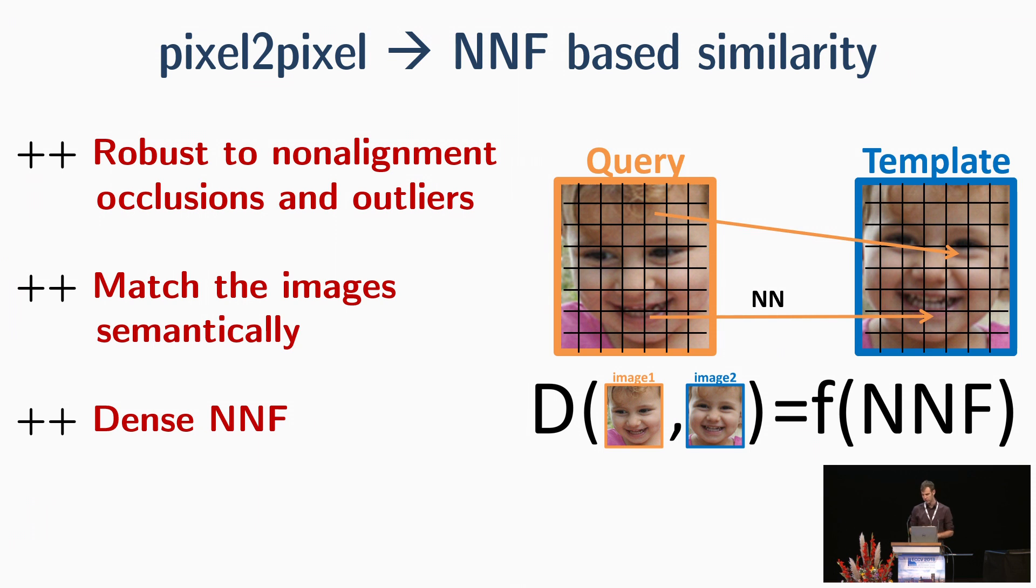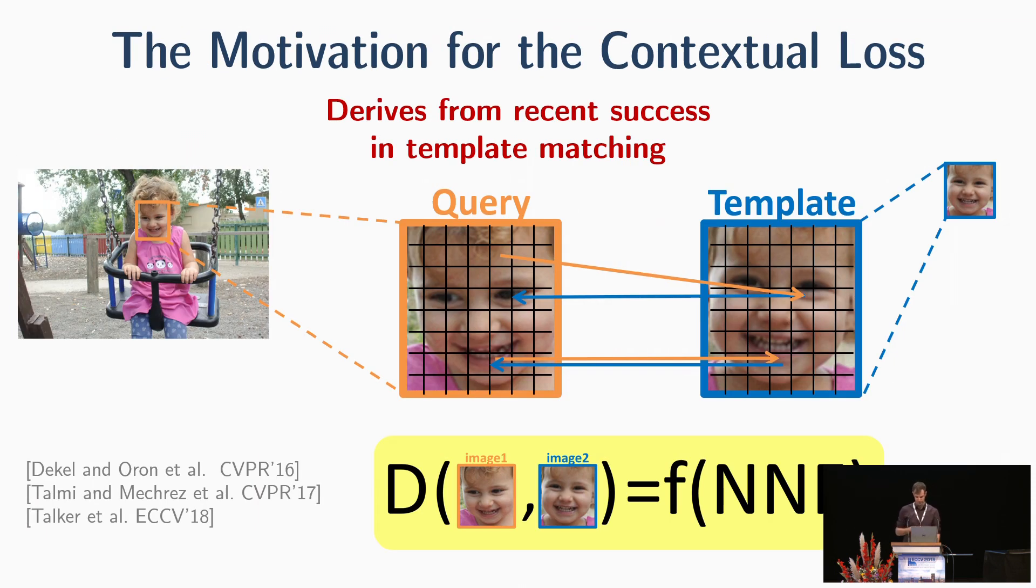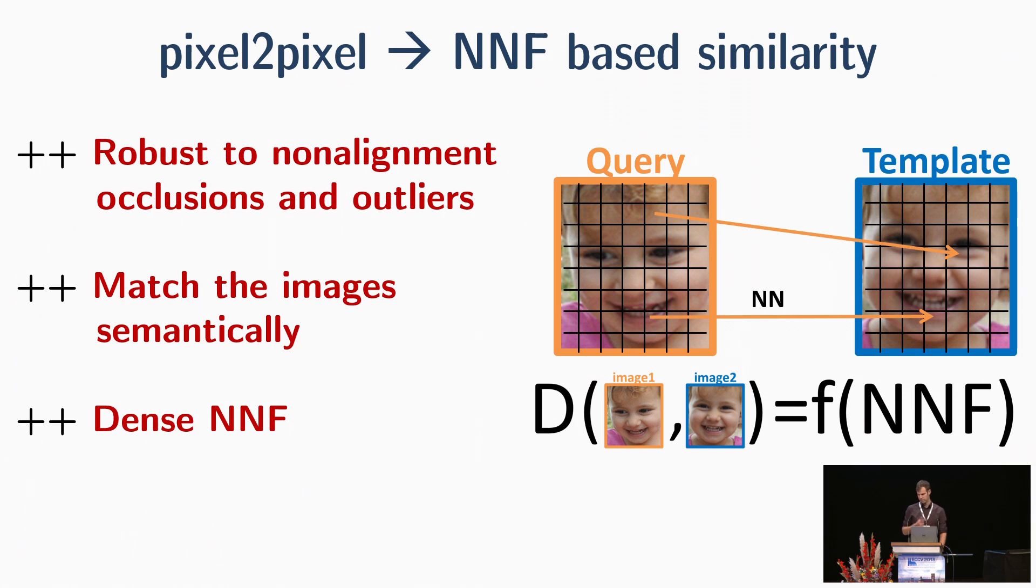Nearest neighbor field-based similarity has many advantages over pixel-to-pixel loss functions. First, it is robust to this misalignment, and it can work when occlusion occurs or when outliers exist. Second, it can match the images semantically.